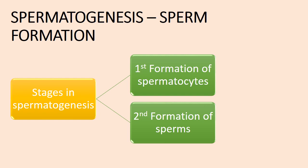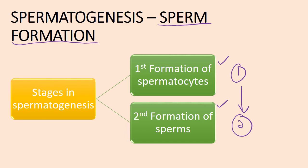First, we need to know that sperm formation is known as spermatogenesis. In spermatogenesis, it has two stages: the first one is the formation of the spermatocytes, and the second one is the formation of the sperms. Please remember that both of these processes occur in sequence — the formation of the spermatocyte is the first stage, followed by the formation of the sperm.